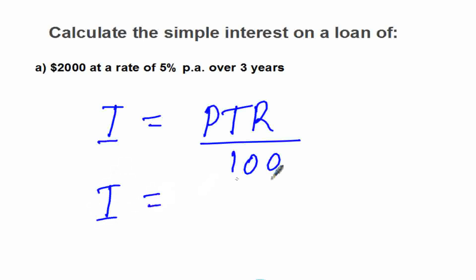So in this case, our simple interest I equals the principal—that is, the investment or the amount you've borrowed—so that is $2000, times the T, that is time, and it is 3 years, then times the rate, which is 5.